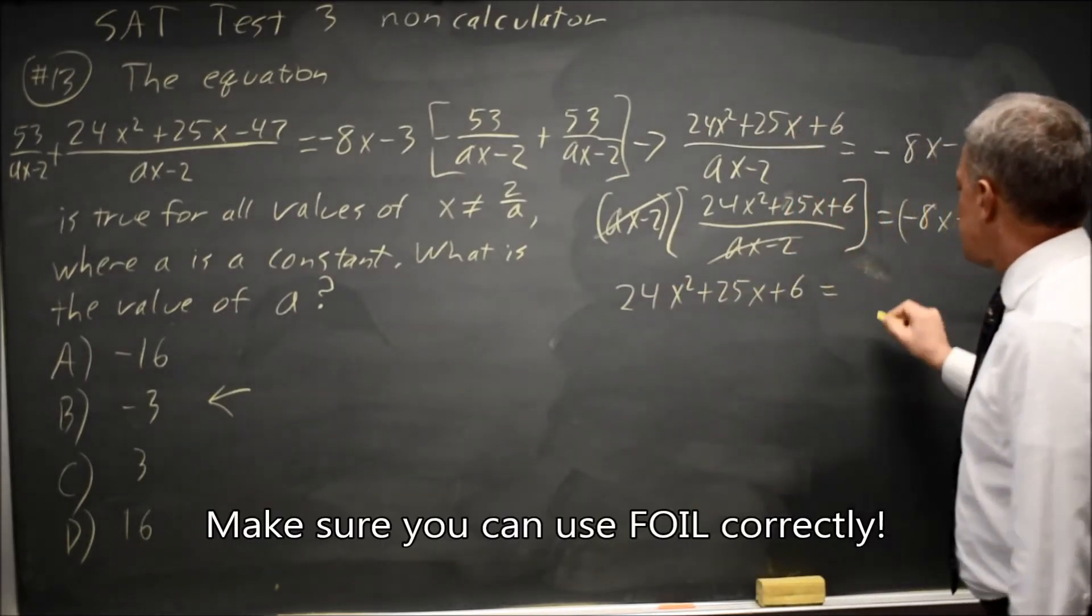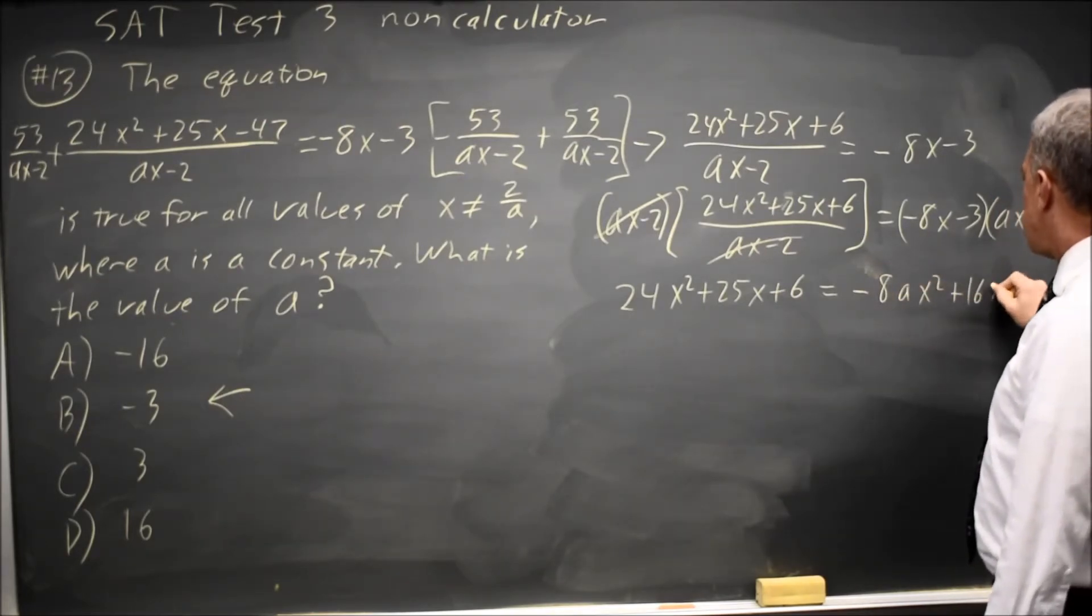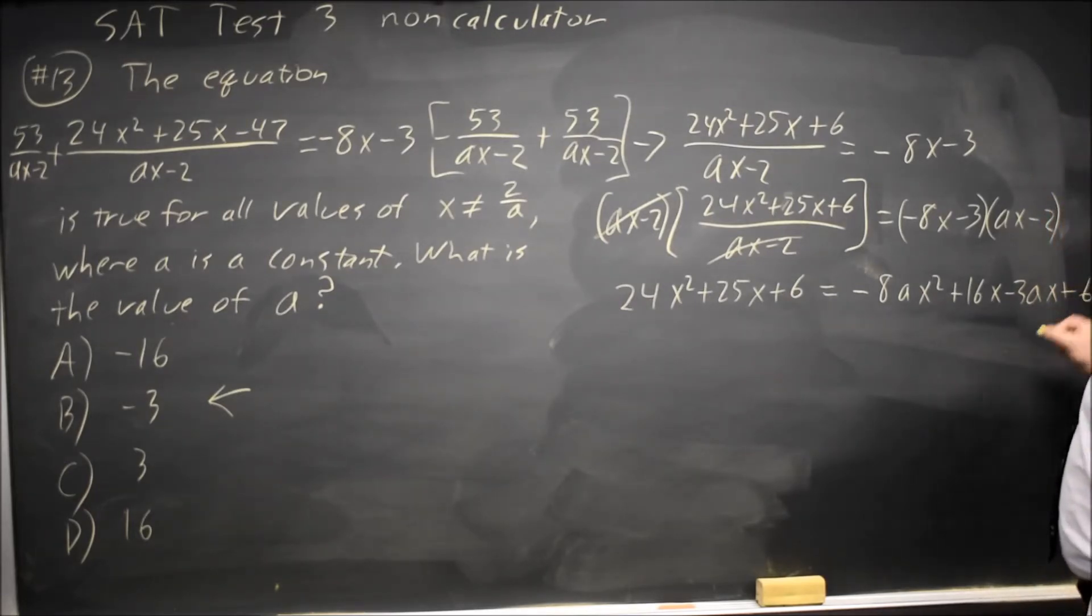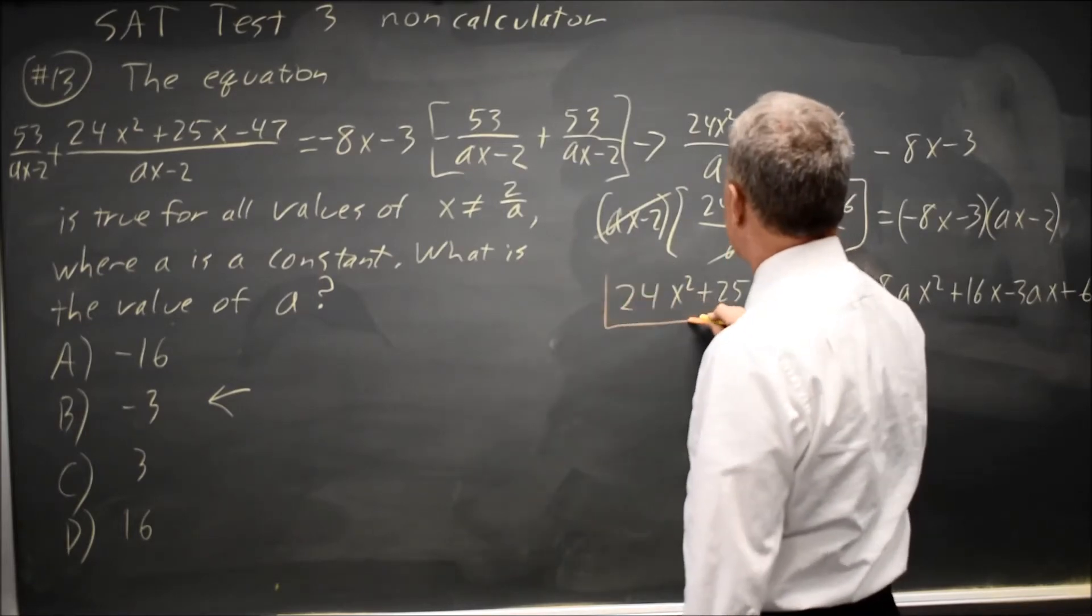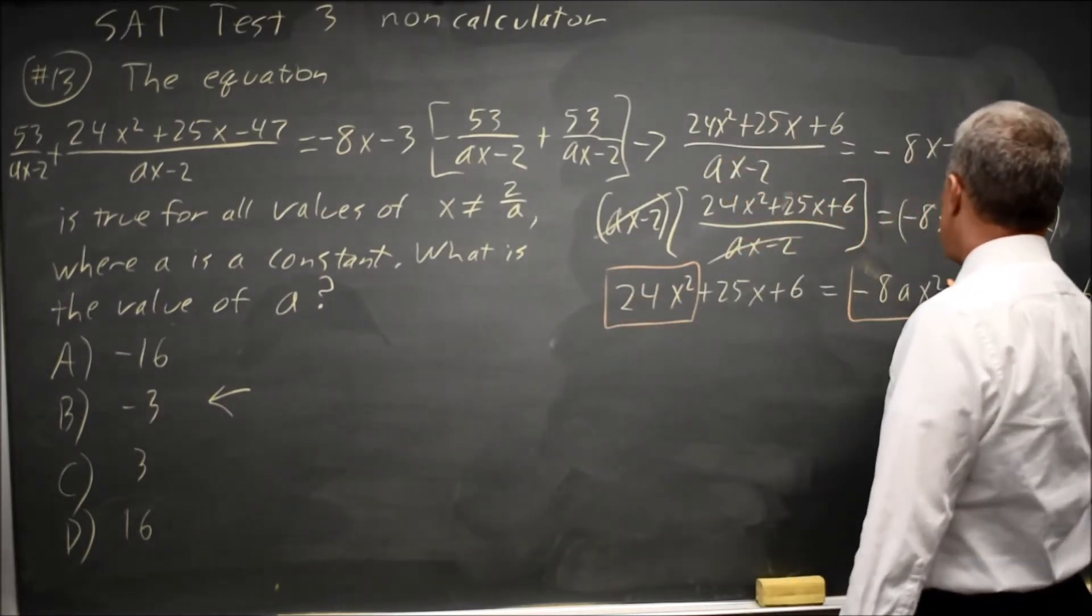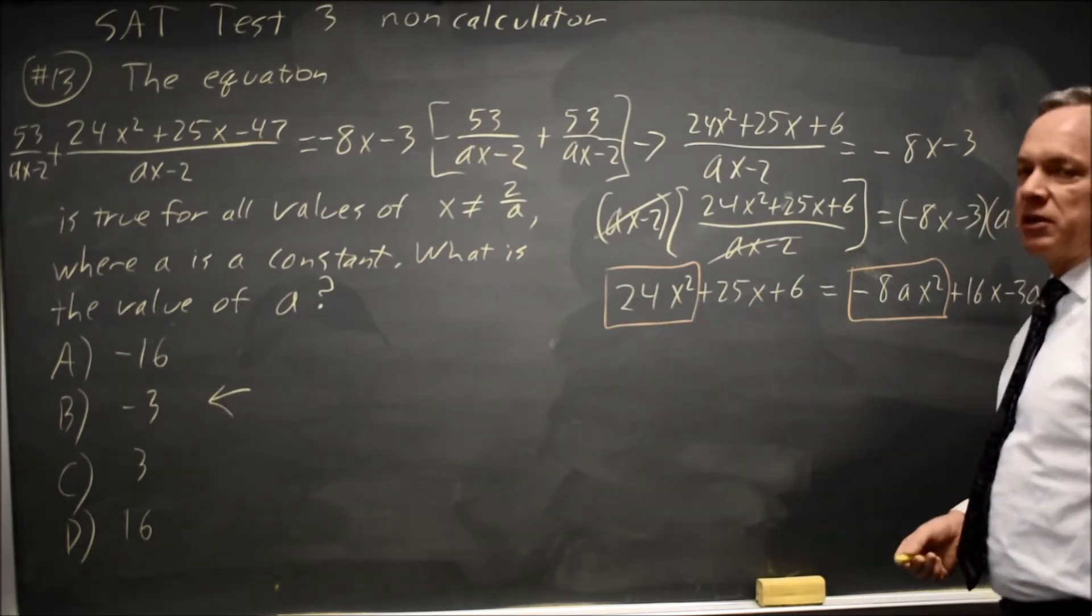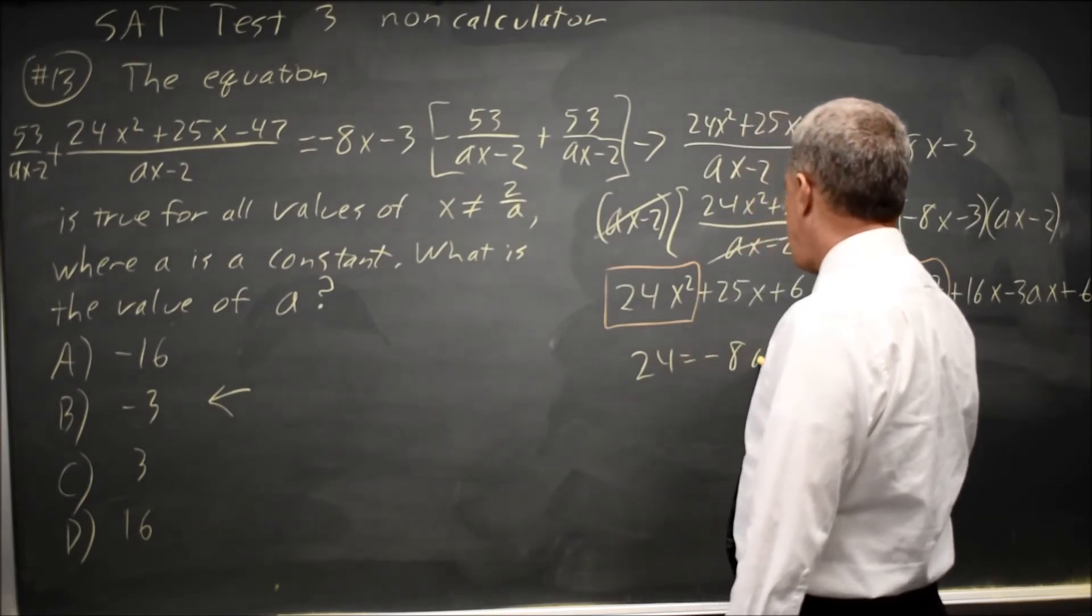The right-hand side is negative 8AX squared plus 16X minus 3AX plus 6. The only part we really need to look at is the 24X squared equals negative 8AX squared. If these two quadratics are equal, then their X squared coefficients have to be equal.